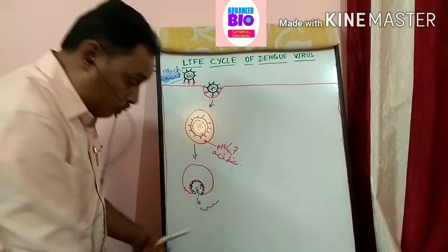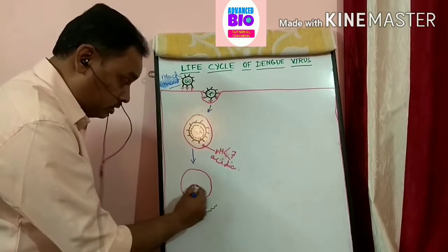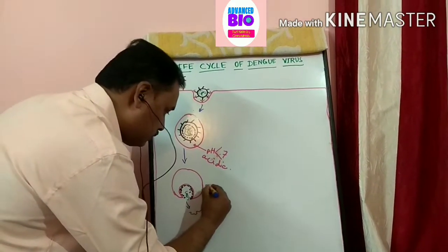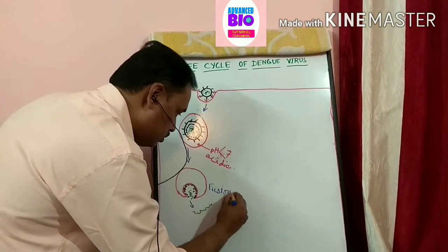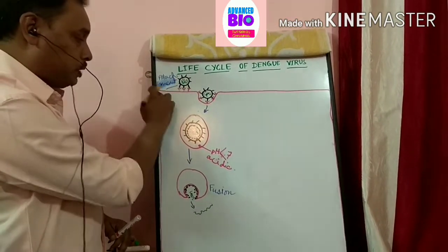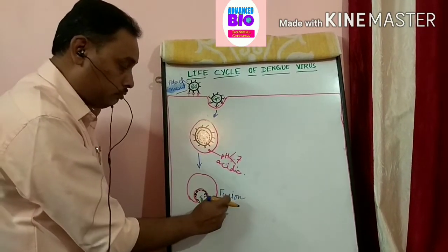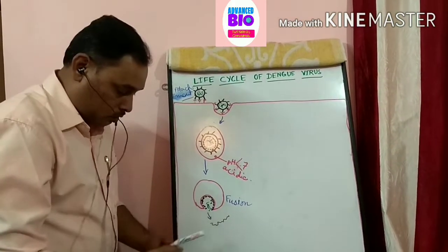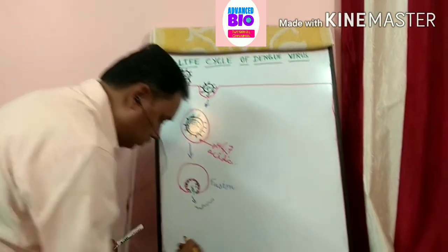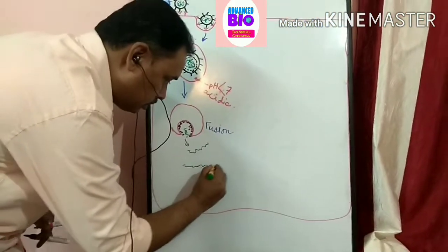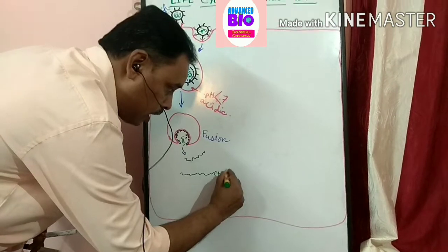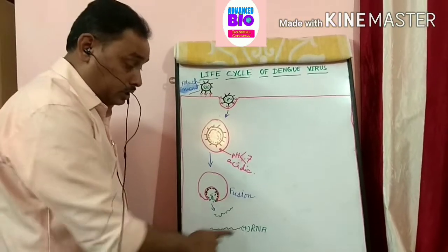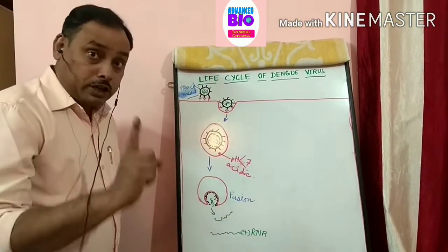The name of this process is fusion. So the first process is attachment, then phagocytosis, then fusion, after which we have the naked genome or RNA. Since it is positive-sense RNA, it has the capability to produce or synthesize different structural proteins immediately.